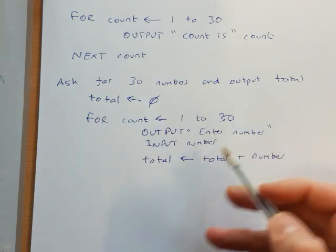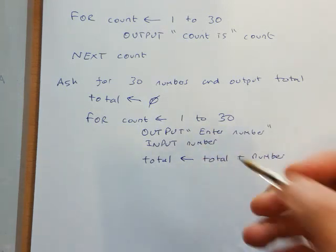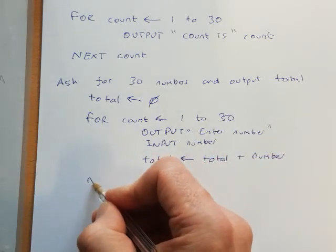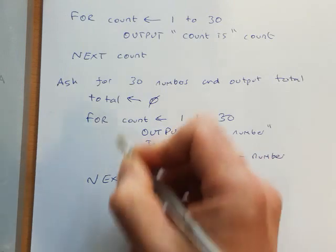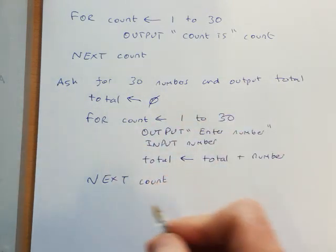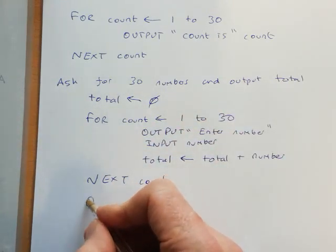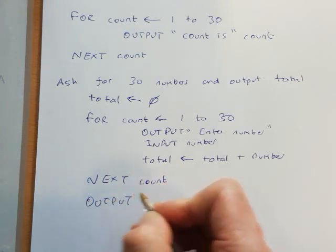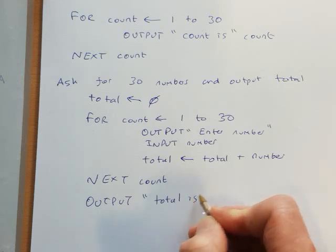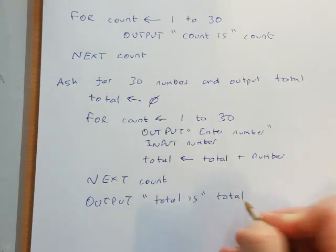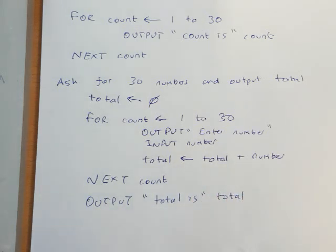So every time we go around, we're adding number to total. So that's our loop finished. So now we're just going to say next count. So we'll go around 30 times. And then finally, once the loop's finished, we can output 'total is' and then total. Okay, so that's the first type of iteration where we have what we call a count-controlled loop.